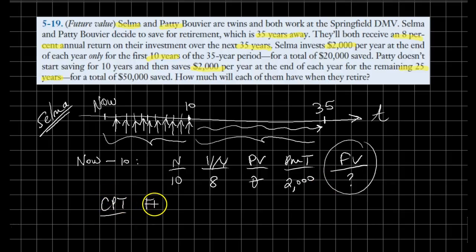When we compute the future value by the end of year 10, that should equal, using our financial calculator, $28,973.